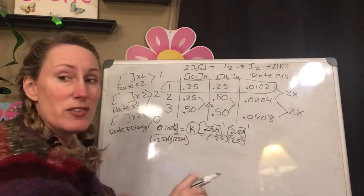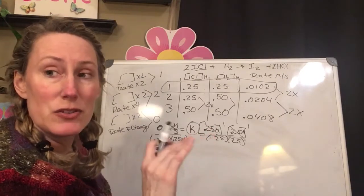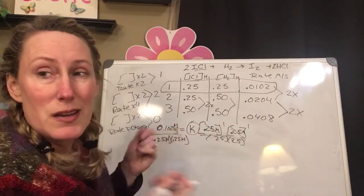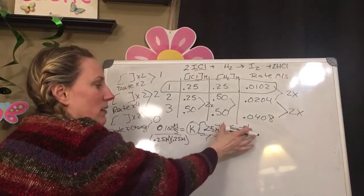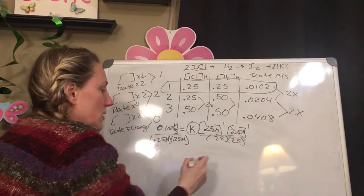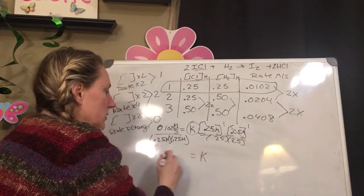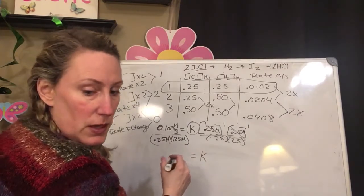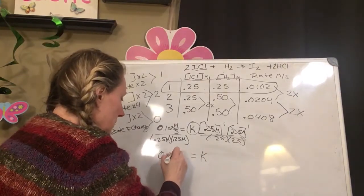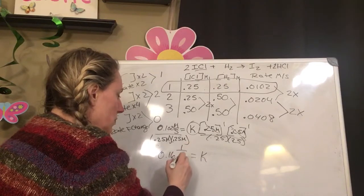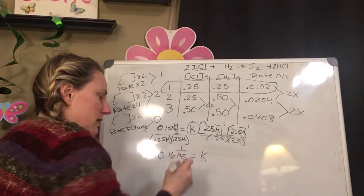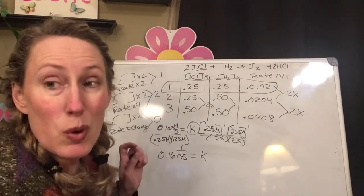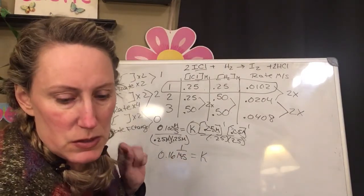These units will change all the time, so you need to make sure you write all your units in, because it won't always be the same thing, because it depends on what your exponent is for here. So my k equals 0.161 over M second. M times S. That's an M S. So it's molar per second.